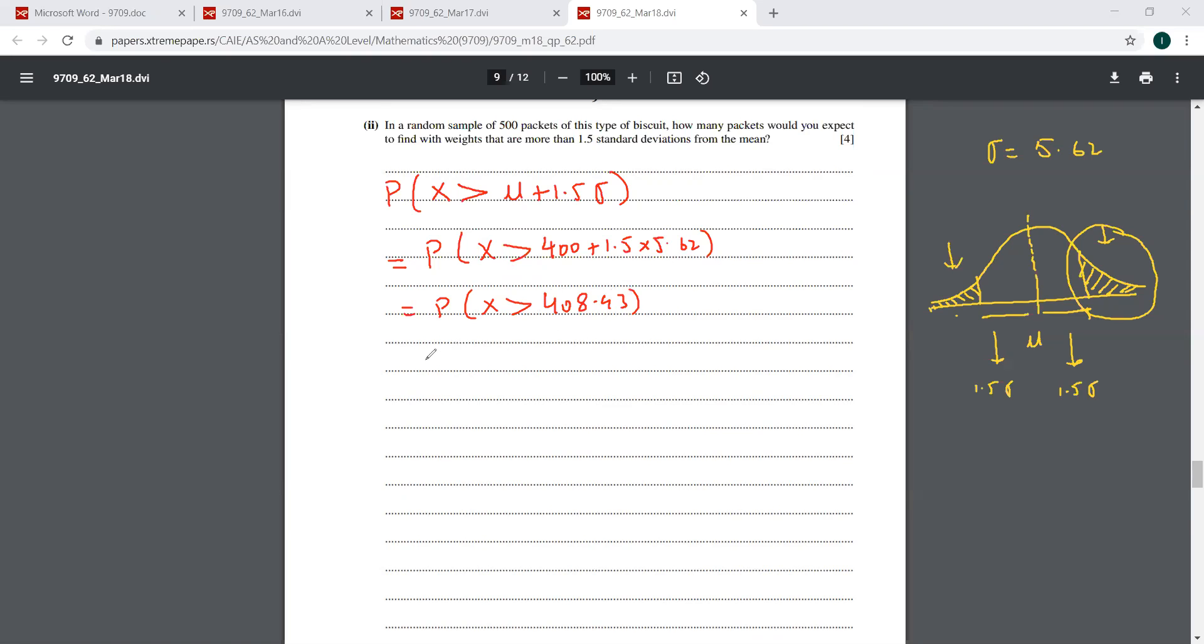So we standardize. This would be Z is greater than 408.43 minus 400 over the standard deviation, which is 5.62. So this is 8.43 divided by 5.62. That is 1.5.